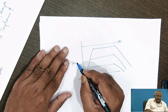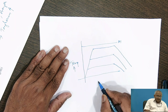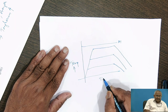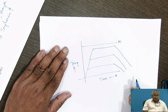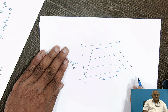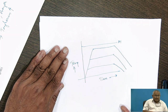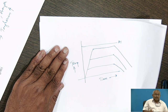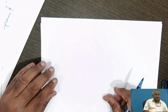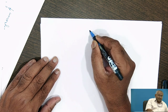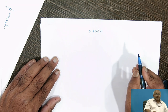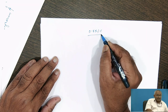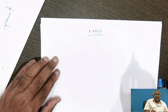Temperature is plotted along the y-axis and time along the x-axis. I hope you have understood the tempering heat treatment cycle. Now we will take one example to see how change in properties takes place during tempering. Suppose we have a steel with 0.55% carbon.